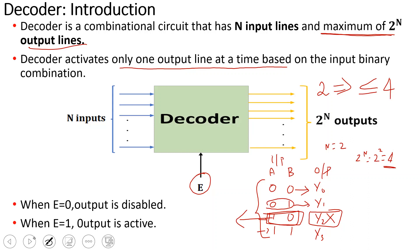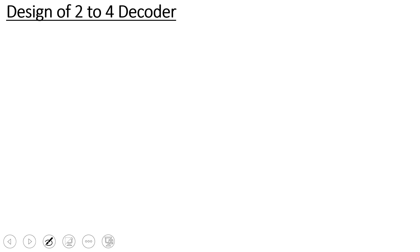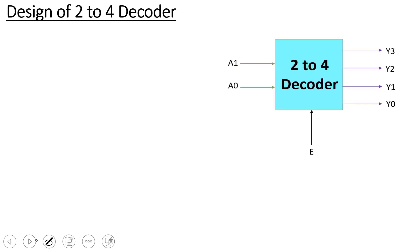Now let's look at the 2-to-4 decoder. With 2 inputs, the output is 2 power n — 2 power 2 — giving 4 output lines. The design procedure for a combinational circuit starts with the problem statement, then the truth table, then the Boolean expression, then the logic expression, and finally the circuit diagram.